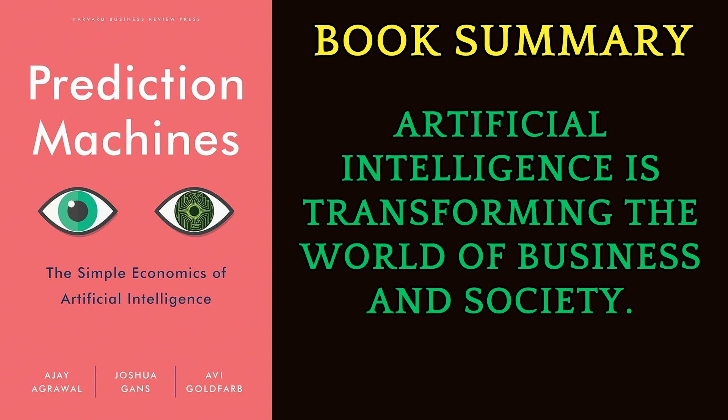Review. The book Prediction Machines: The Simple Economics of Artificial Intelligence by Ajay Agrawal, Joshua Gans, and Avi Goldfarb is a book that explains how artificial intelligence is transforming the world by lowering the cost of prediction. The authors are economists who use simple and intuitive concepts to show how AI affects various aspects of business, society, and policy.